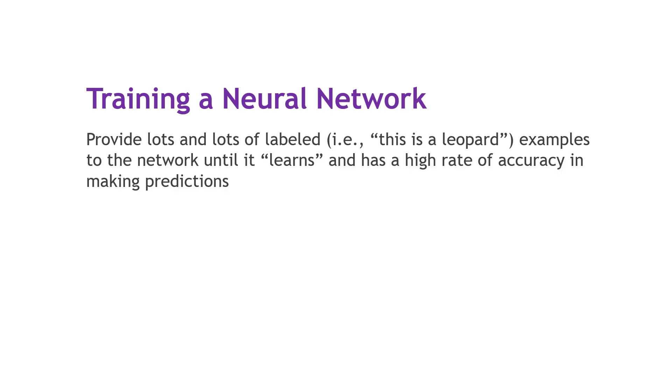That's where training comes in. We train a neural network by providing lots and lots of labeled data. And remember, the label just says this is a leopard, or this is an elephant, or whatever it is that we're passing in. So we just pass in lots of those examples until it learns and has a high rate of accuracy in making predictions.